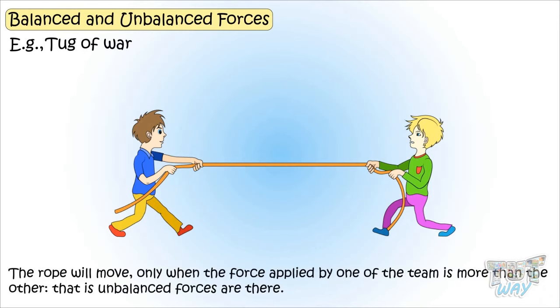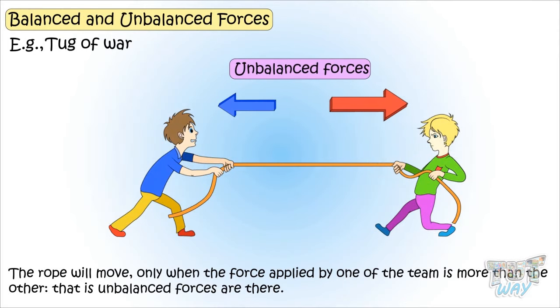The rope will move only when the force is applied more by one side of the team than the other. That means unbalanced forces are there.